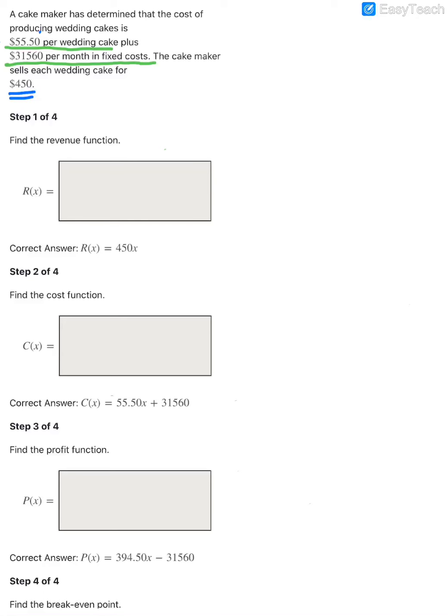In step one, they're asking me to find the revenue function. The revenue function refers to how much money your business is going to bring in. If this person is selling each cake for $450, if they only made one wedding cake in a month we would multiply 450 times 1. If they sold two in a month we'd multiply 450 times 2. If they sold three in a month we'd multiply 450 times 3. Now you see the pattern. However many wedding cakes they sell, we're going to multiply by 450. So we're going to let x represent the number of wedding cakes. We would say our revenue function is 450 times x.